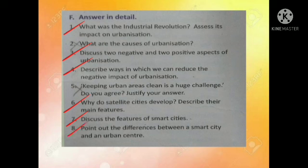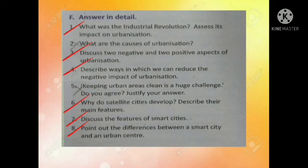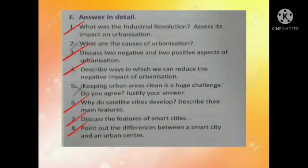Question number eight: point out the differences between a smart city and an urban center. Smart city — first: the use of resources is planned, ensuring long-term returns. Second: pollution is minimal. Third: use of space is well planned, so housing is affordable. Fourth: technology is built into the infrastructure to monitor inefficiencies. Urban center — first: the use of resources is unplanned and focused on maximizing short-term returns. Second: pollution is maximum. Third: lack of adequate planning leads to slums. Fourth: technology is used mainly in the private sector.